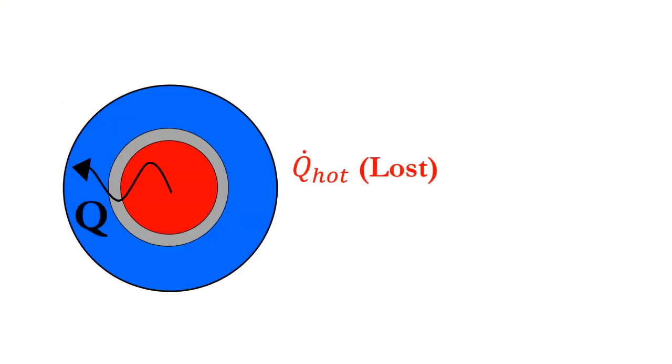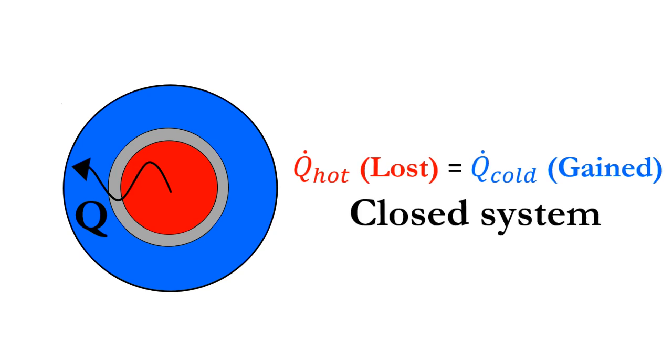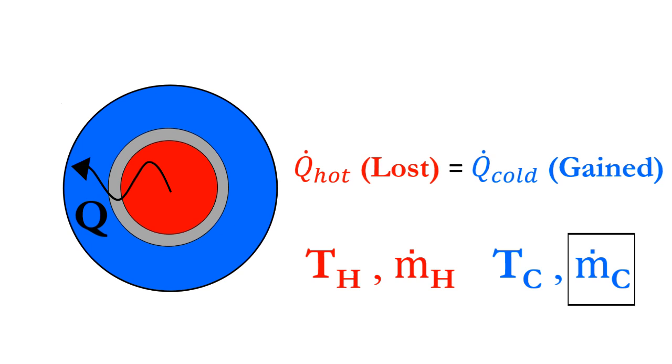First, we know that the heat transferred from the hot fluid must be equal to the heat picked up by the cold fluid due to conservation of energy in a closed system. Let's analyze the impact of changing the flow rate of the cold fluid while keeping both inlet temperatures and the flow rate of the hot fluid constant.